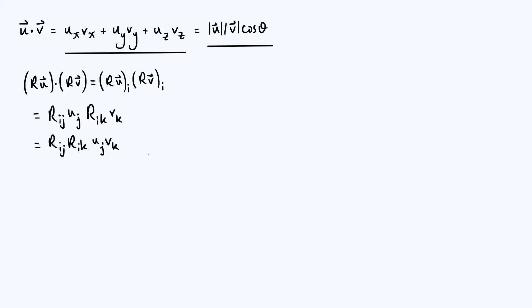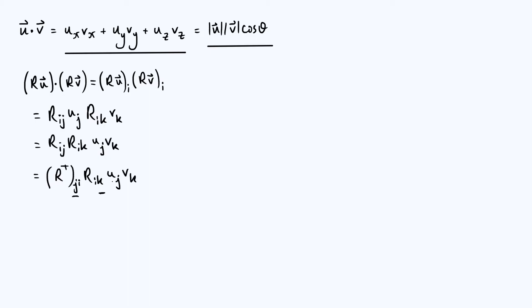The next step involves that first term R_ij. I'm going to write that as the j-i component of the transpose of R, because if we transpose a matrix we flip the rows and columns, and so we can transpose it and then flip the indices. So that gives us (R^T)_ji · R_ik · u_j · v_k. If you're familiar with suffix notation, you'll recognize this as the j-k component of R^T times R, because we're summing over the inner index i — these first two terms are basically just a matrix multiplication, giving (R^T · R)_jk · u_j · v_k.